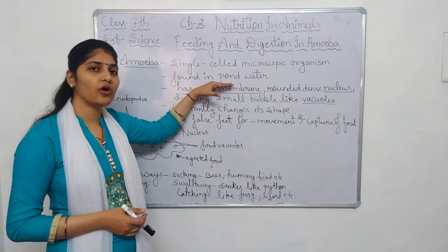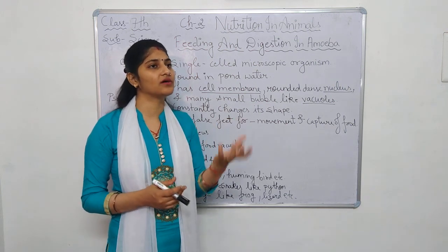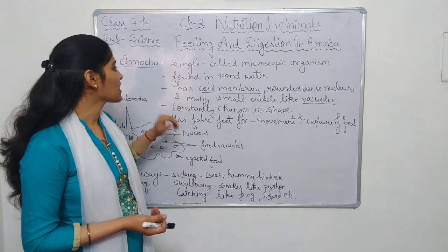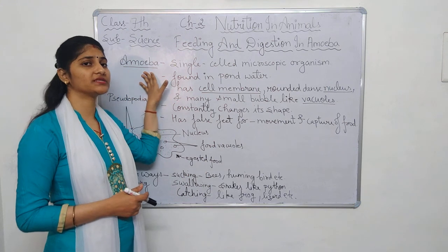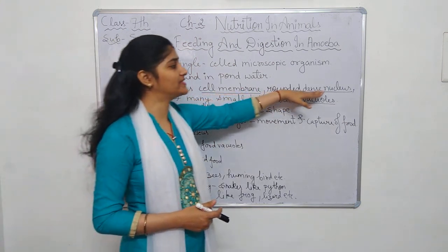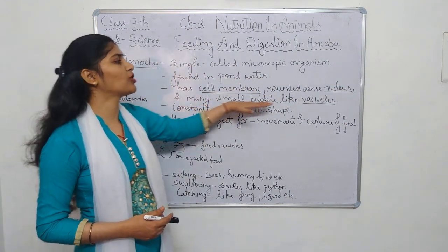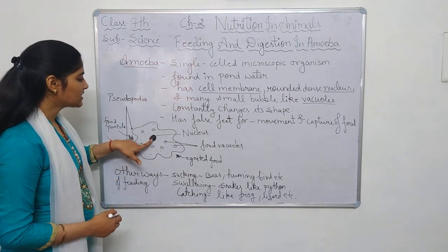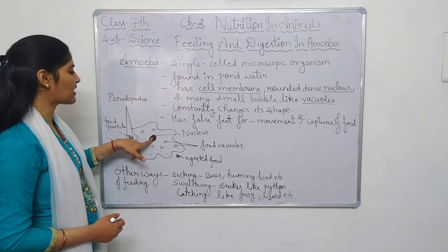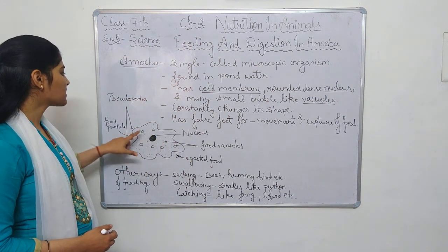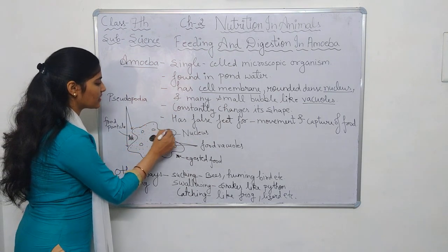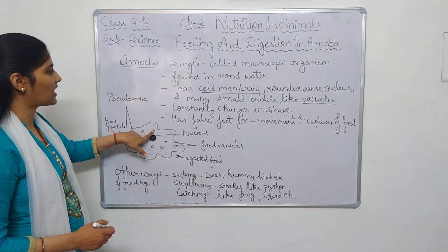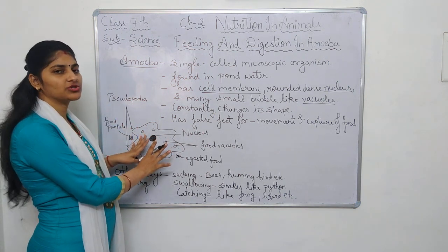Amoeba is found in pond water. You can take a sample of pond water and observe it under a microscope to see an amoeba. Now let us understand its structure. It has a cell membrane, a rounded dense nucleus, and many small bubble-like vacuoles. In this diagram, the circular dense structure is the nucleus, the boundary is the cell membrane, and the bubble-like structures are the vacuoles.